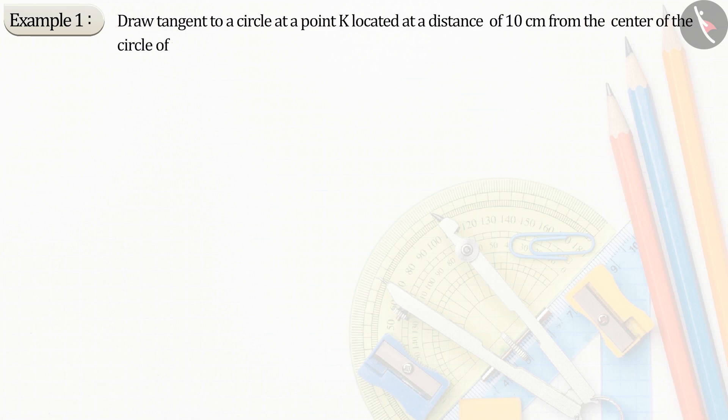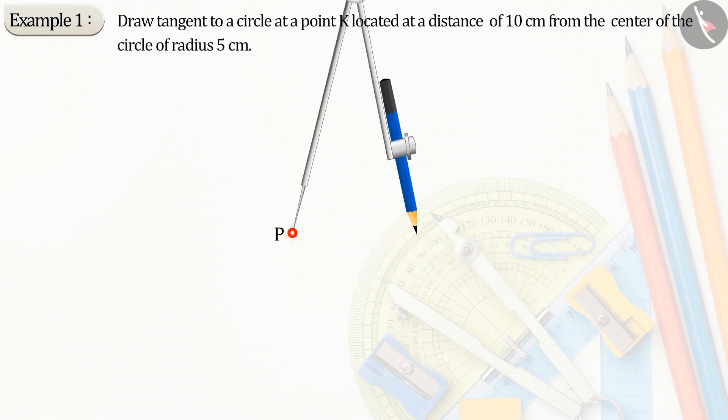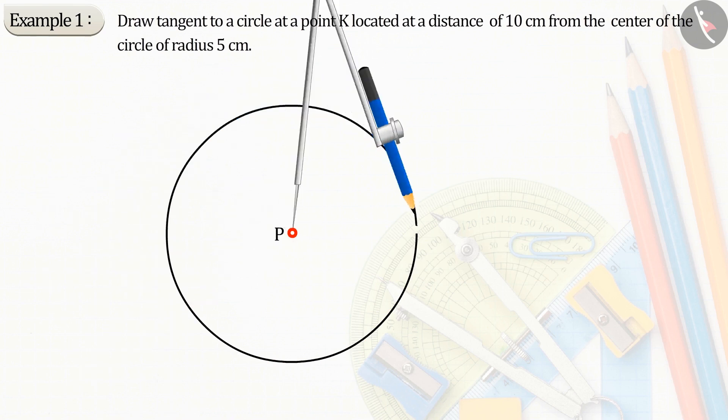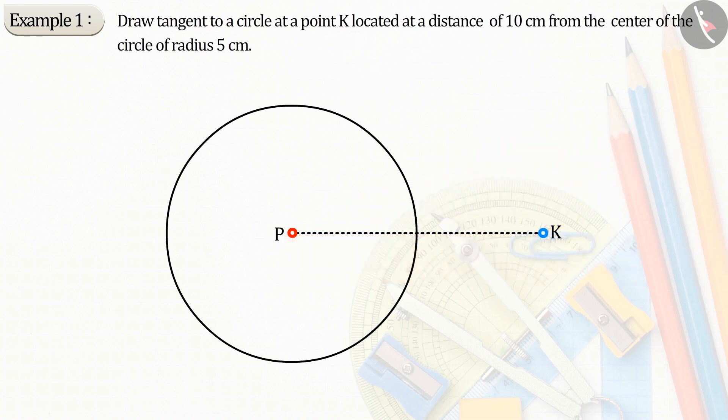Draw tangent lines to the circle at a point K located at a distance of 10 cm from the center of the circle of radius 5 cm. First, consider a point P as center. Draw a circle of radius 5 cm. Now let's take a point K at a distance of 10 cm from the center, which gives the line segment PK.